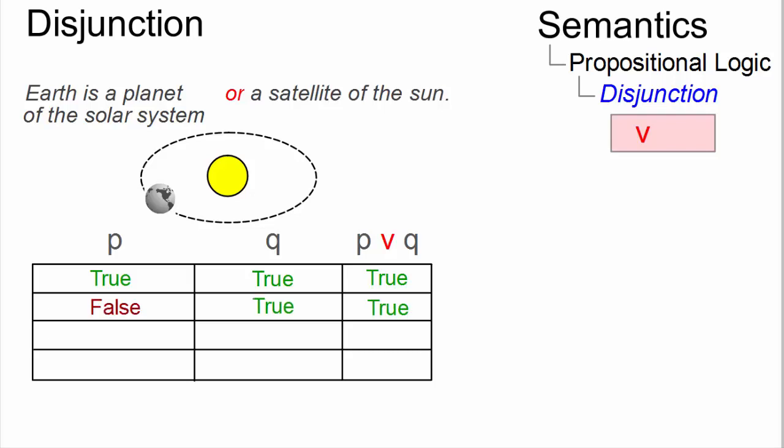But even if P is false and the Earth is not a planet, and Q is true, P or Q is true too.